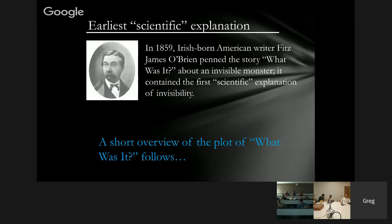Now I want to jump back to the earliest scientific explanation, because the science of invisibility goes back a long time — to the 1850s at least. There was a story written by Fitz James O'Brien back in 1859 called "What Was It?" — as far as I know, this is really the first scientific explanation of invisibility. There have been a lot of non-scientific magical stories about invisibility that go back much longer, but we'll restrict ourselves just to the examples where there was science involved.